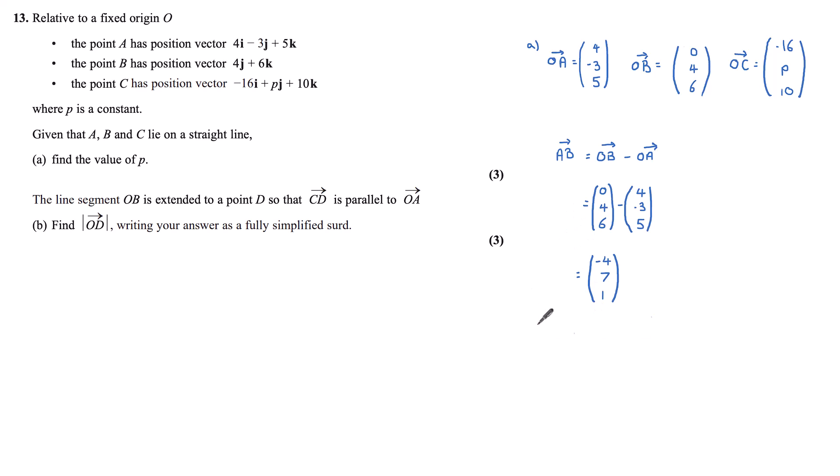Similarly, BC is OC minus OB. OC is (-16, p, 10), and OB is (0, 4, 6). Again, subtracting, this gives me that BC is (-16, p-4, 4).